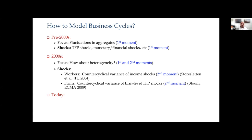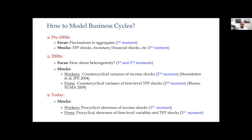Today I'm going to talk about recent evidence from the last five years or so, including ongoing work. The shocks I'm going to discuss for workers will be pro-cyclical skewness shocks. Income shocks will not show variance increasing during a recession — it will be the skewness that becomes more negative. And the same will be true for firms, both for TFP shocks and for outcome variables.